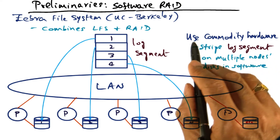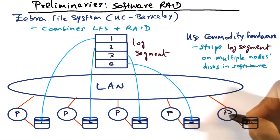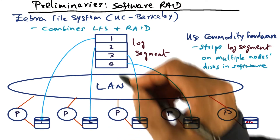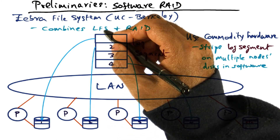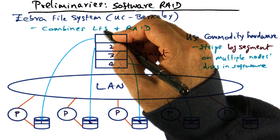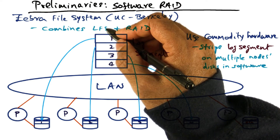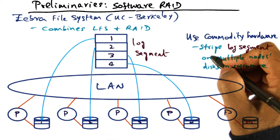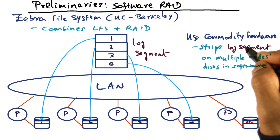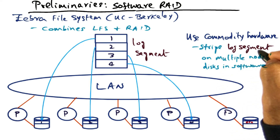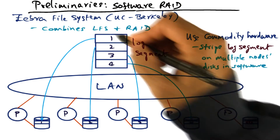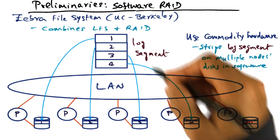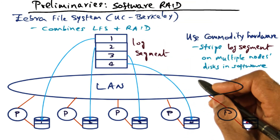The idea is to use commodity hardware available as nodes connected to disks on a local area network. Since LFS — log-structured file system — is good for getting rid of the small write problem, we're going to employ LFS as the technology for the file server. In this case, what we have are not data files but log segments that have to be written out to disk, and we're going to stripe the log segment across multiple nodes in software — that is the RAID technology.